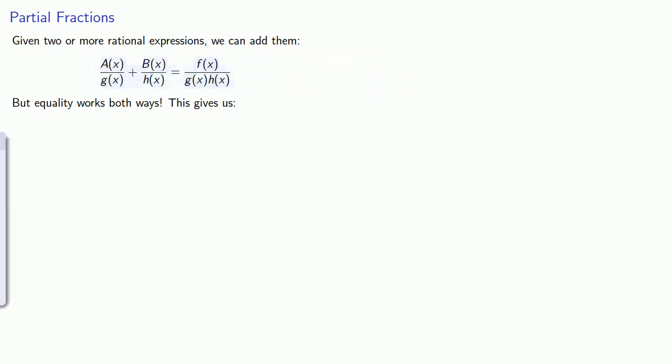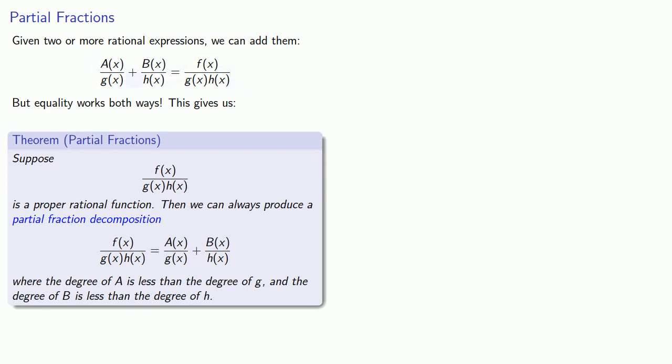This leads to the following result. Suppose I have a proper rational function where the denominator is expressible as a product of two polynomials. Then we can always produce a partial fraction decomposition where the degree of each numerator is less than the degree of the denominator.